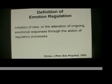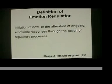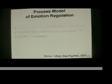James Gross, one of my mentors, has defined emotion regulation in the following way: the initiation of new or the alteration of ongoing emotional responses through the action of regulatory processes. What does this actually mean in terms of a process model? How does this play out, and what are the different conditions and moments where we can intervene with different forms of emotion regulation?